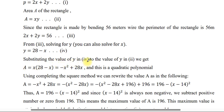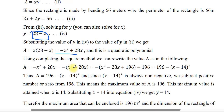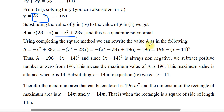Substituting the value of Y into the area equation: A = X times Y = X times (28 minus X). We get A = negative X squared plus 28X. This is a quadratic function.